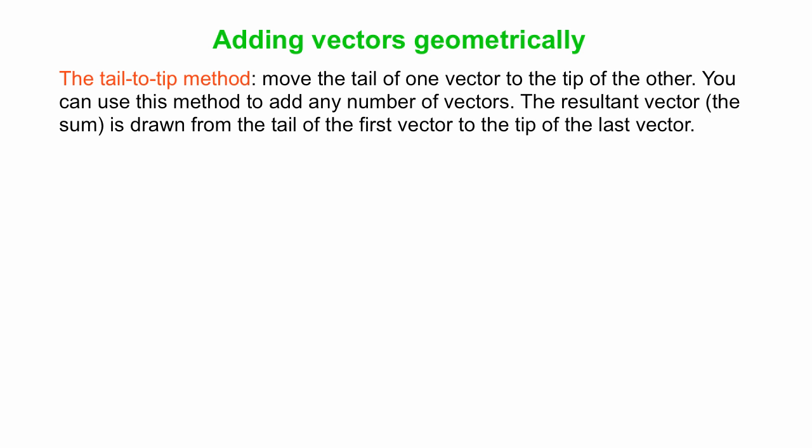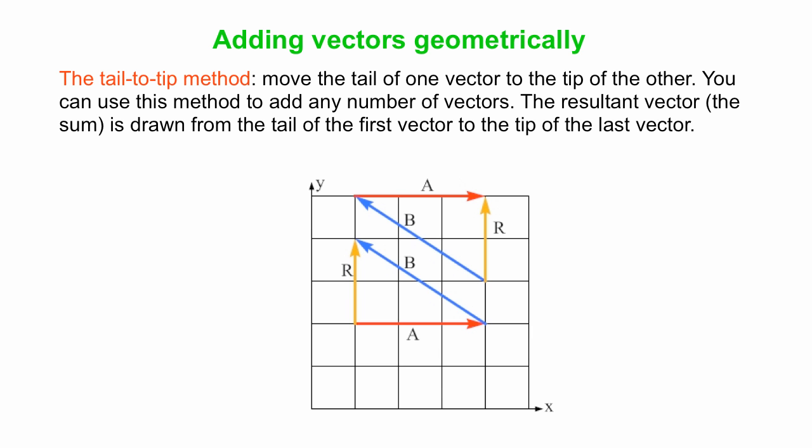Okay, so this will be our method. We're going to use the tail-to-tip method. So we'll move the tail of one vector to the tip of the other vector. The tip is where the arrowhead is. And we're going to do it for two vectors, but you can extend this to any number of vectors you want.